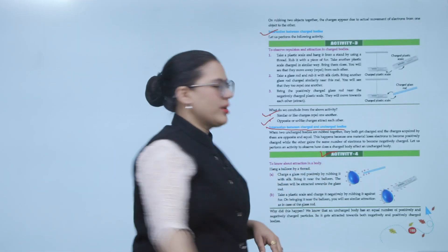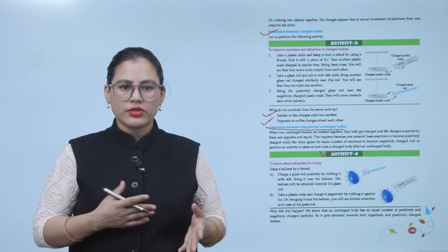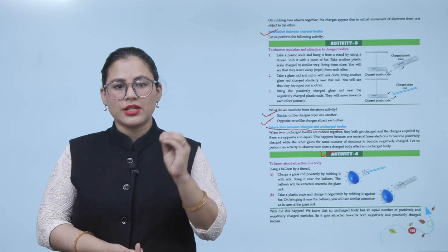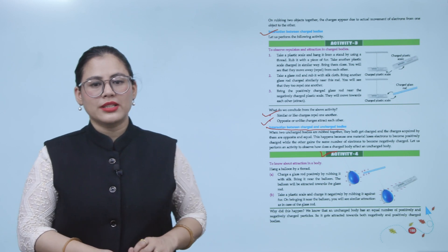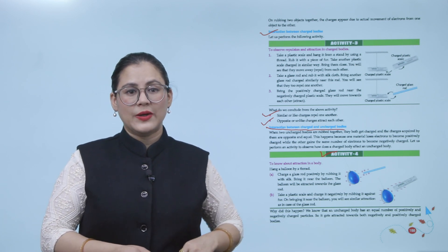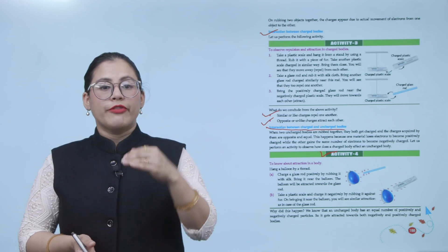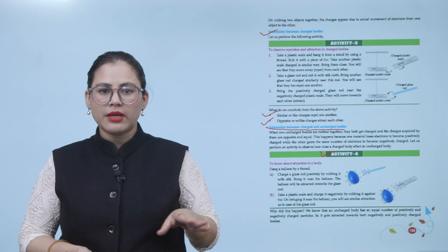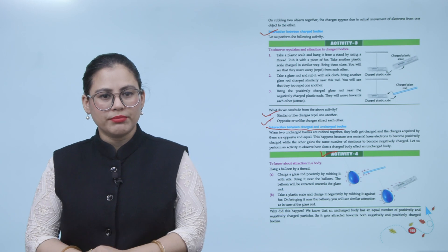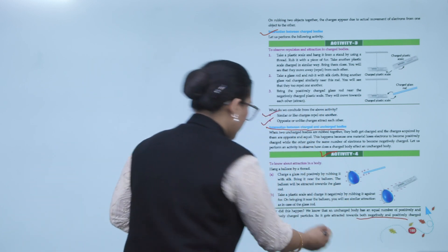Activity 4 — to know about attraction in uncharged bodies: hang a balloon by a thread. Charge a glass rod positively by rubbing it with silk and bring it near the balloon — the balloon will be attracted towards the glass rod. Take a plastic scale and charge it negatively by rubbing it against fur, then bring it near the balloon — you will see similar attraction. Why? Because an uncharged body has an equal number of positively and negatively charged particles, so it gets attracted towards both negatively and positively charged bodies.